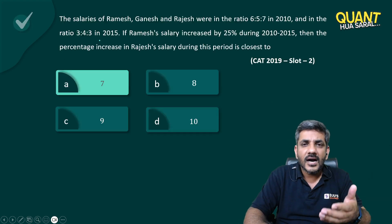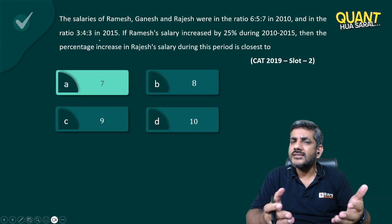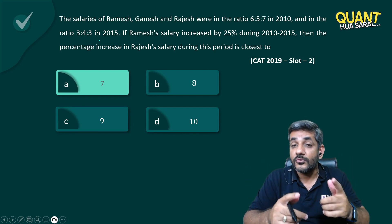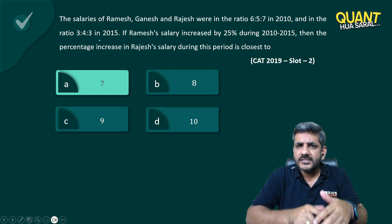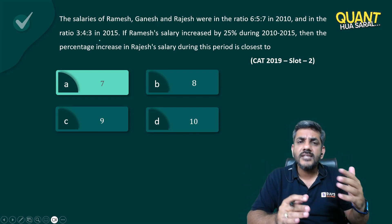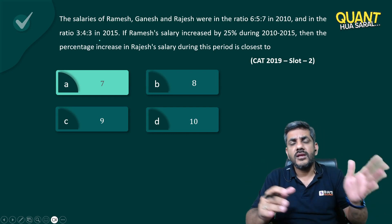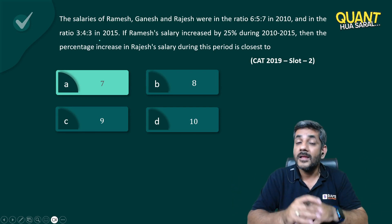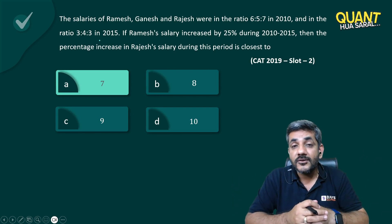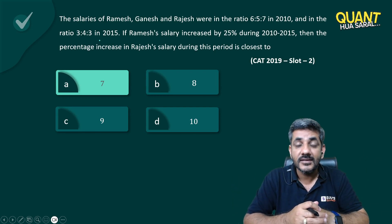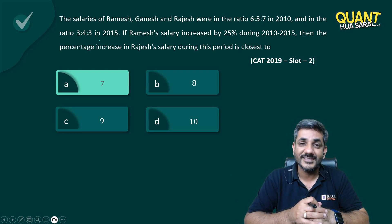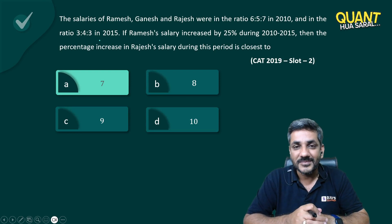Can there be a question simpler than this if you just use aptitude? If you use 6x, 5x, 7x and then increase by 1.25x and so on, it makes your job a little more difficult. This is aptitude and that's what I ask you to do. Thank you very much.